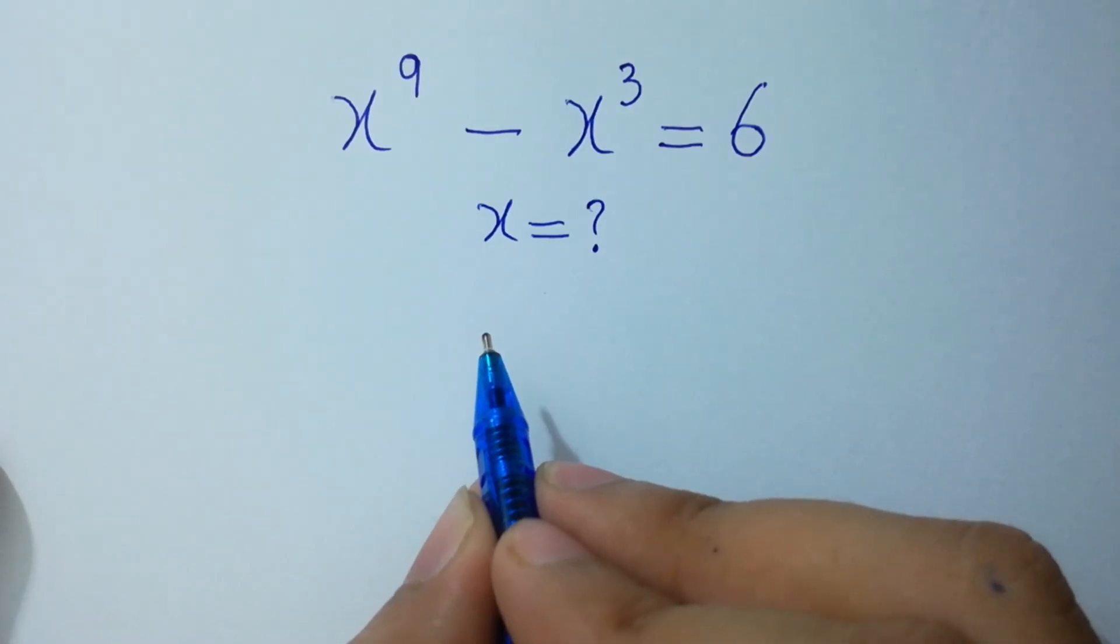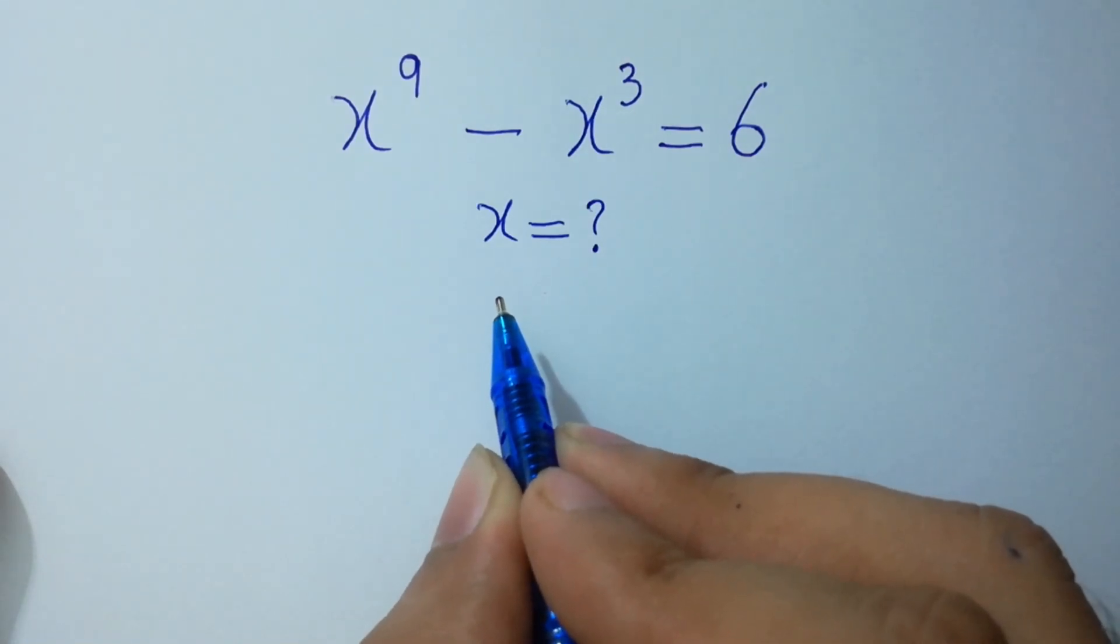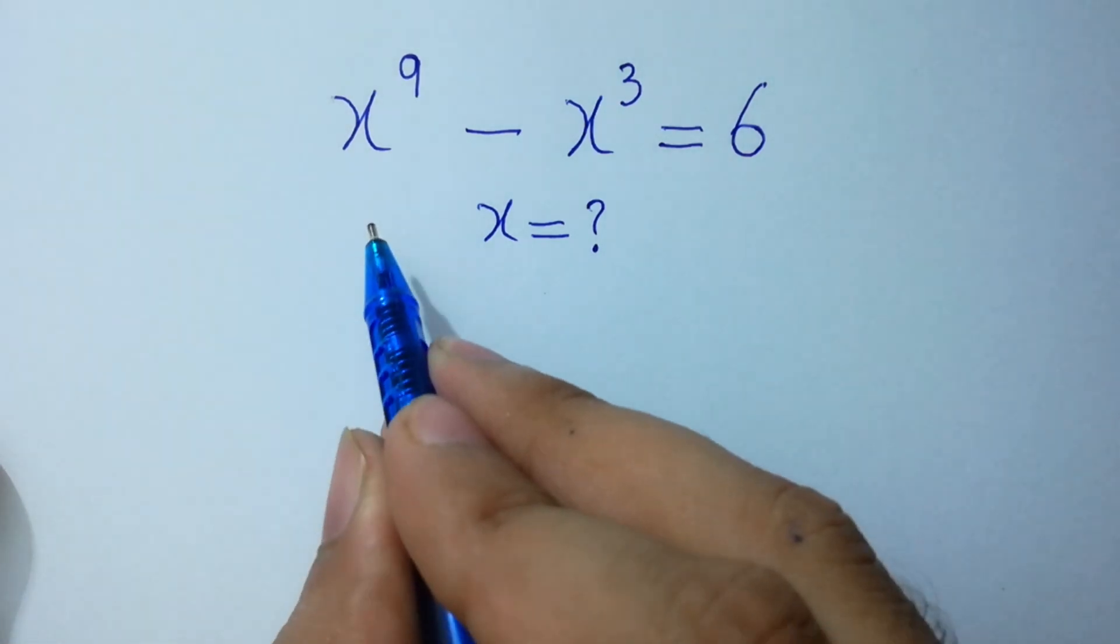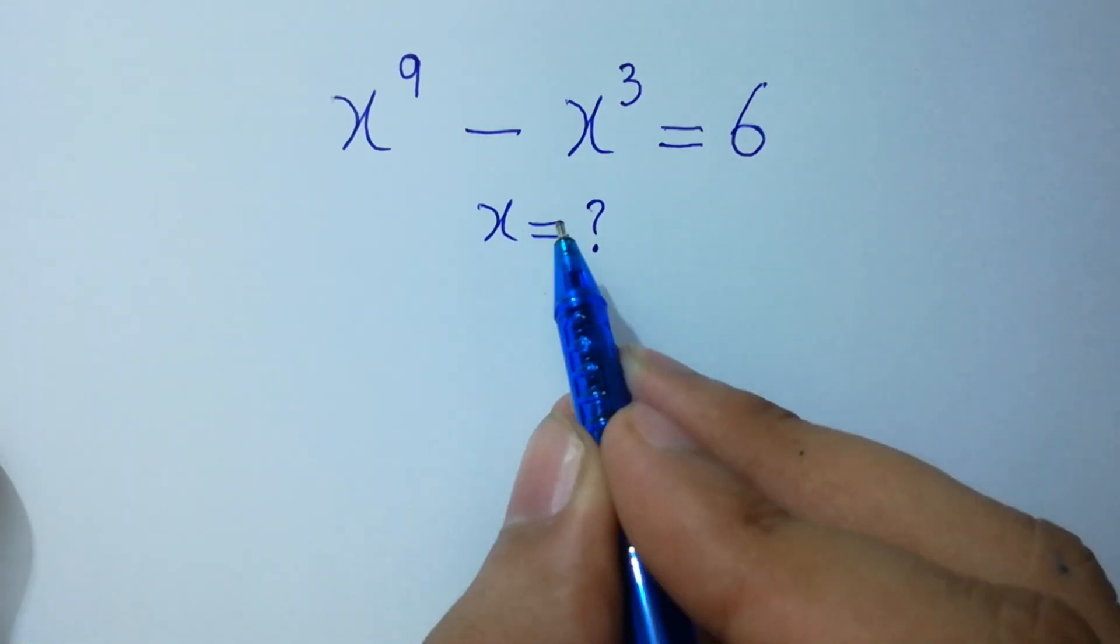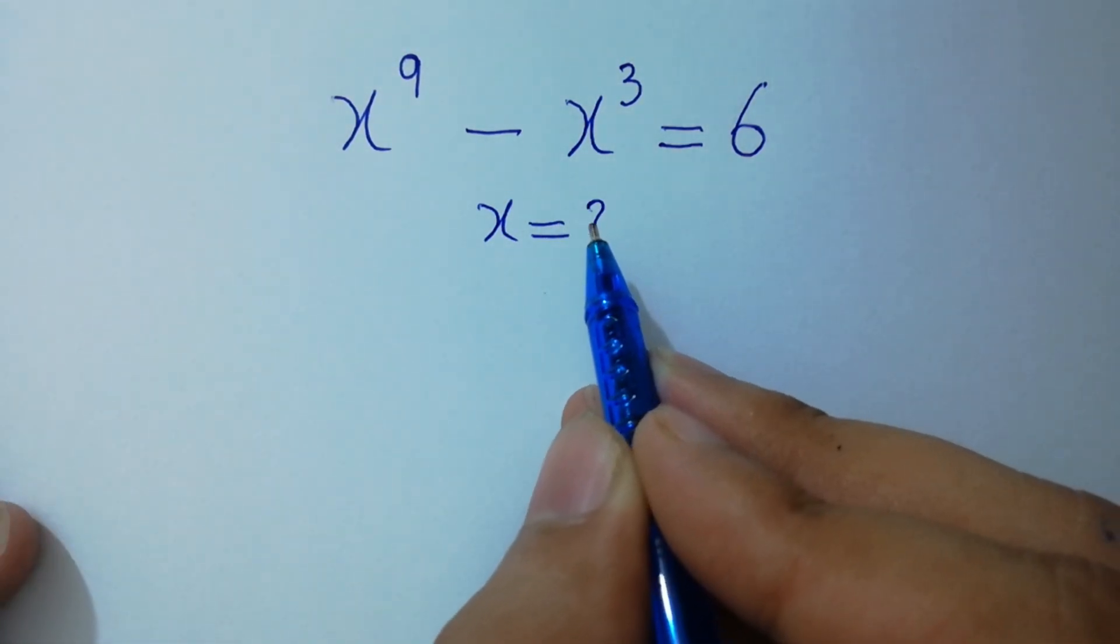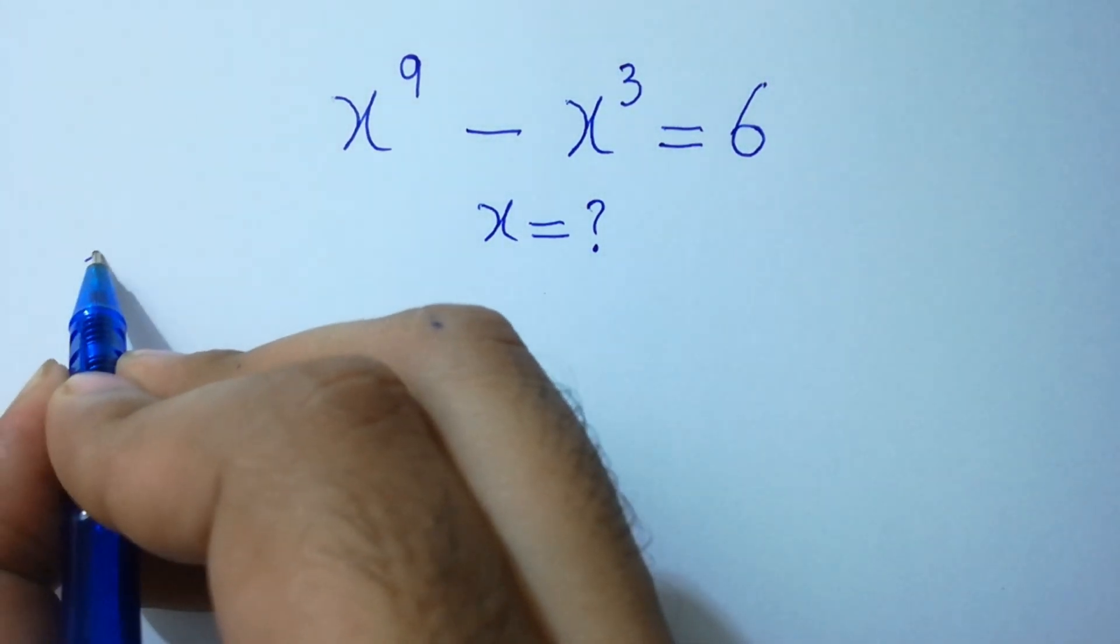Hello friends, find the value of x if x to the power 9 minus x cube equal to 6. Let's solve it.